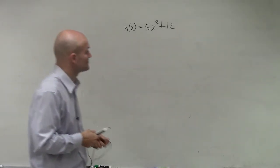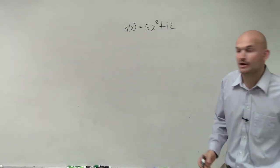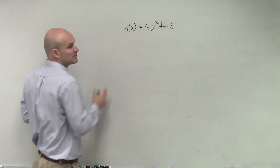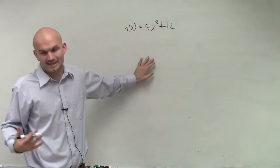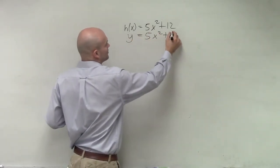So for this problem, we have h(x) = 5x² + 12. What we want to do is find the inverse. Going back through our step process, the first thing we're going to do is replace the h(x) with y. That's just going to help with our algebra. So we replace it with y = 5x² + 12.